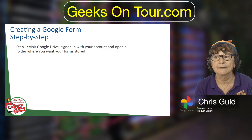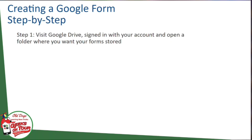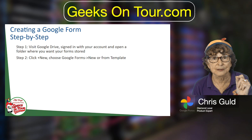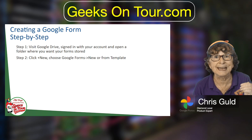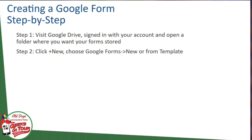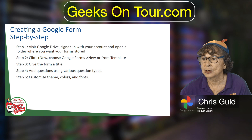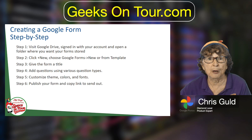You visit Google Drive and make sure you're signed in with your account. You open the folder where you want your form to be stored, then click the plus New — meaning you want to make a new thing in your Google Drive. You choose Google Forms and then New. You give the form a title, add your questions, customize your themes and colors, then publish your form and copy the link.